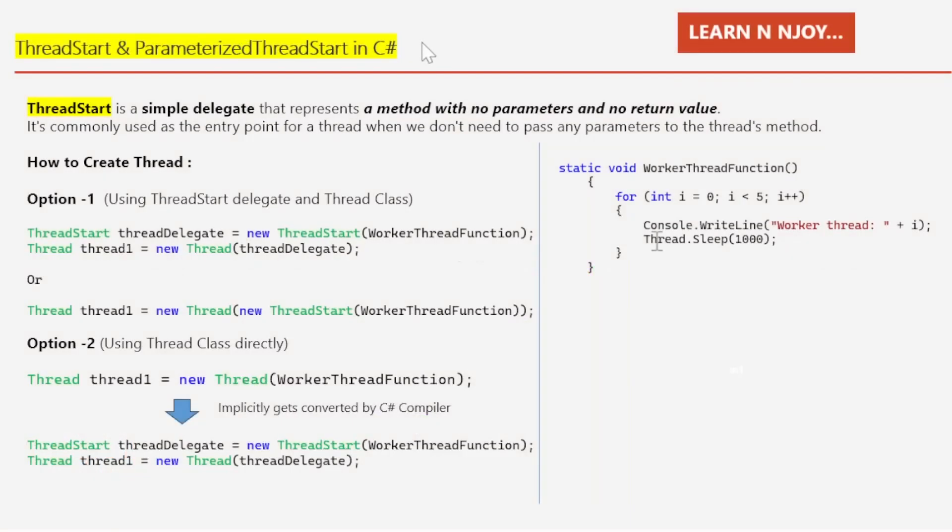Before we dive into code examples, let's understand the basics. ThreadStart and ParameterizedThreadStart are delegates in C# that allow us to define the entry points for threads. These delegates are often used when working with the System.Threading.Thread class to create and manage threads. They are like blueprints that dictate what the thread should execute when it is started.